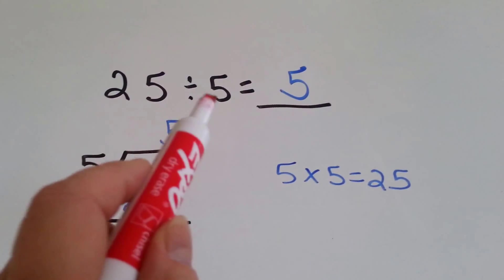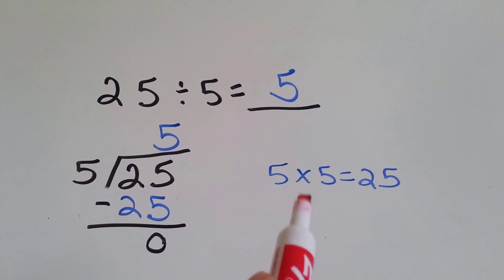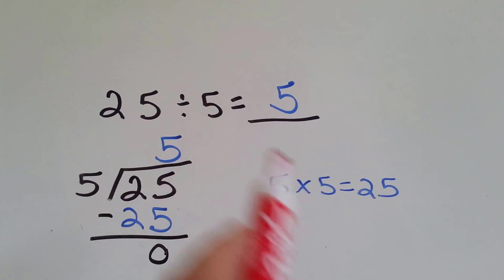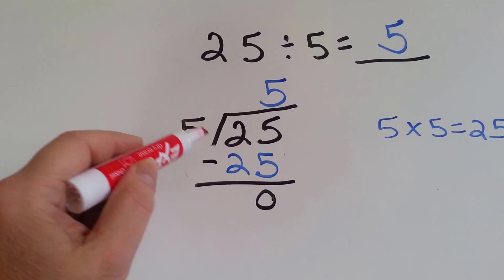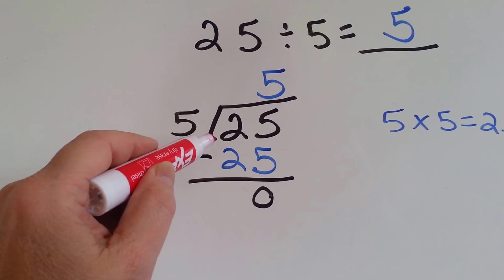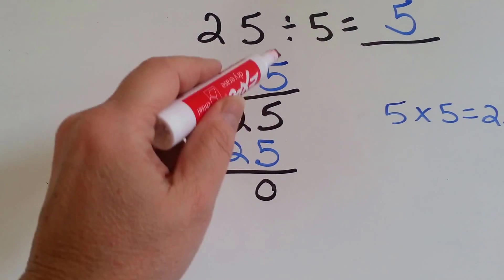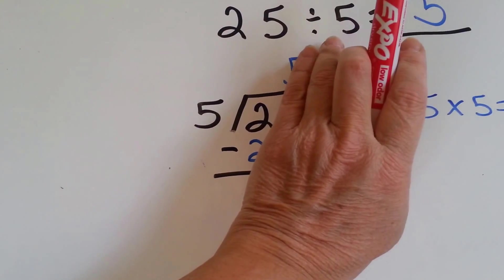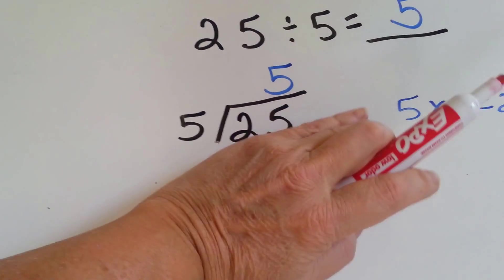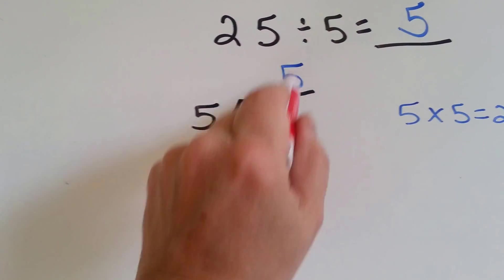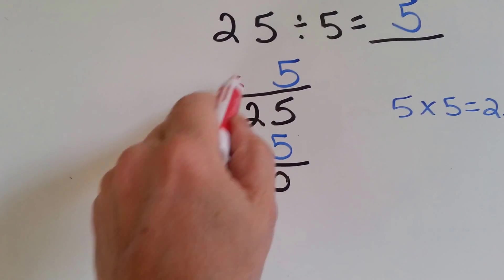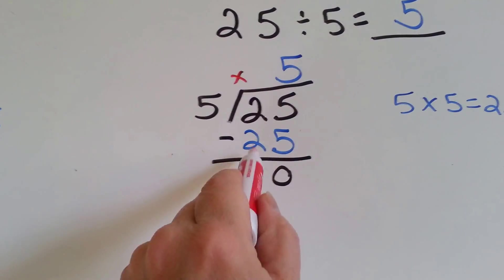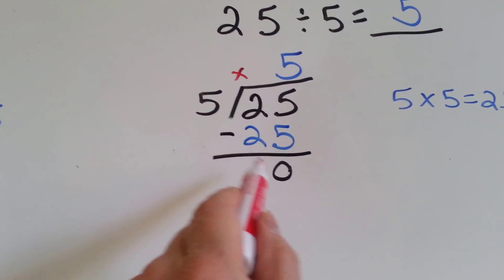25 divided by 5 equals 5, because 5 times 5 equals 25. The fact family. So this is how it would be written. The 25 would be inside this box. 5 goes into 25 five times. It doesn't go into the 2. It goes into the 25, and that's why it goes above the 5. 5 times 5 is 25. We write the answer down here. We do our subtraction, and we get 0.